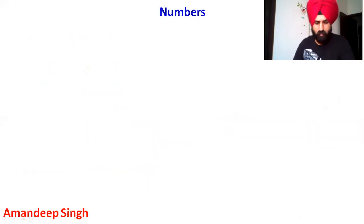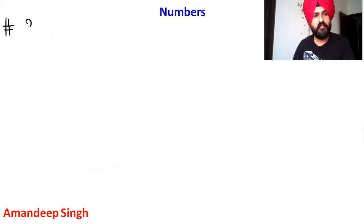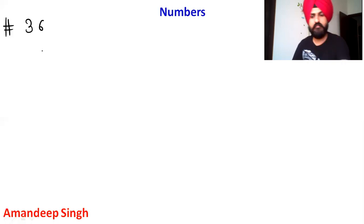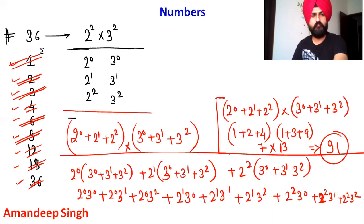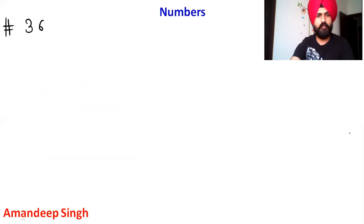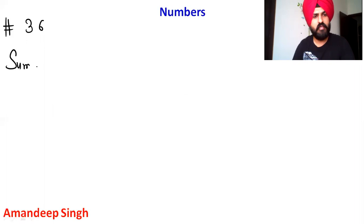Let's verify with 36. Using the formula we get 91, which we confirmed is the sum of all factors. Now if we need the sum of even factors instead, we have to think about what makes a factor even.